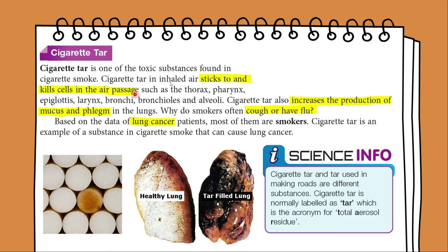The tar then kills the cells in our air passage, such as those in the thorax, pharynx, epiglottis, larynx, bronchi, bronchioles and alveoli. Cigarette tar also increases the production of mucus and phlegm in the lungs. It also irritates the respiratory tract, causing the smoker's cough. Most lung cancer patients are smokers. Cigarette tar can cause lung cancer, emphysema and bronchitis.